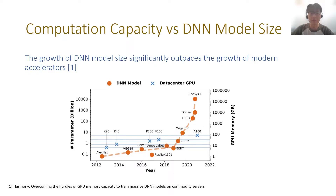We know that deep learning models have achieved impressive success in various scenarios, and computation power is a key factor in catalyzing the success of deep learning. In recent years, the model size has grown rapidly, and the growth of the DNN model size significantly outpaces the growth of modern accelerators.